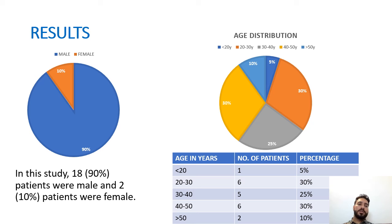Coming to the results, this study showed a male predominance with 18 patients male and two patients female. The age distribution was equal in the 20-30 years and 40-50 years groups, each showing 30% of patients, and the 30-40 years group showing 25% of patients.